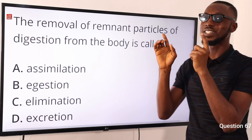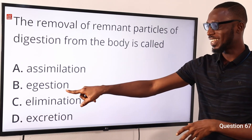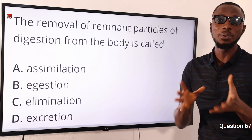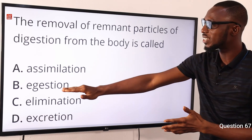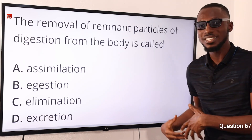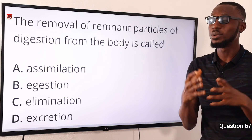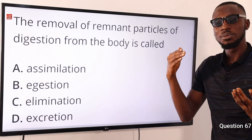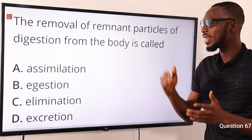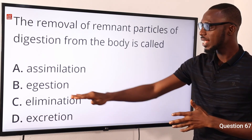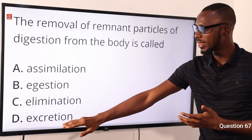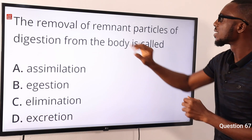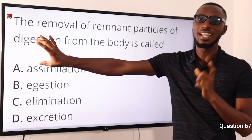Number 67: the removal of remnant particles of digestion from the body is called what? Take note — egestion is different from excretion. Excretion is the removal of metabolic waste products, and it can occur through the skin, urethra, or mouth. Egestion refers specifically to the removal of undigested remnants, occurring through the anus or mouth. So the correct option is option B for egestion.